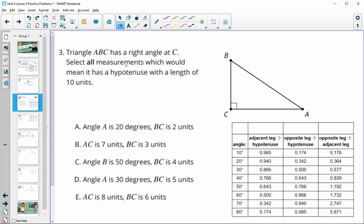Number three, triangle ABC has a right angle at C. Select all the measurements that would mean its hypotenuse has a length of 10. So we're wanting to find the stuff that would force this to be a 10.